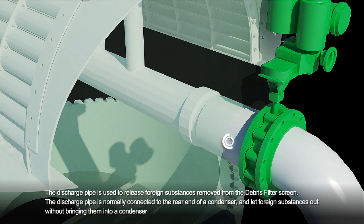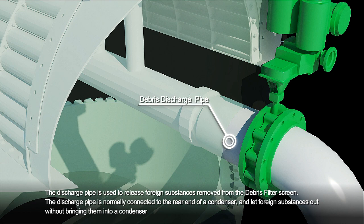The discharge pipe is used to release foreign substances removed from the debris filter screen. The discharge pipe is normally connected to the rear end of a condenser and lets foreign substances out without bringing them into a condenser.